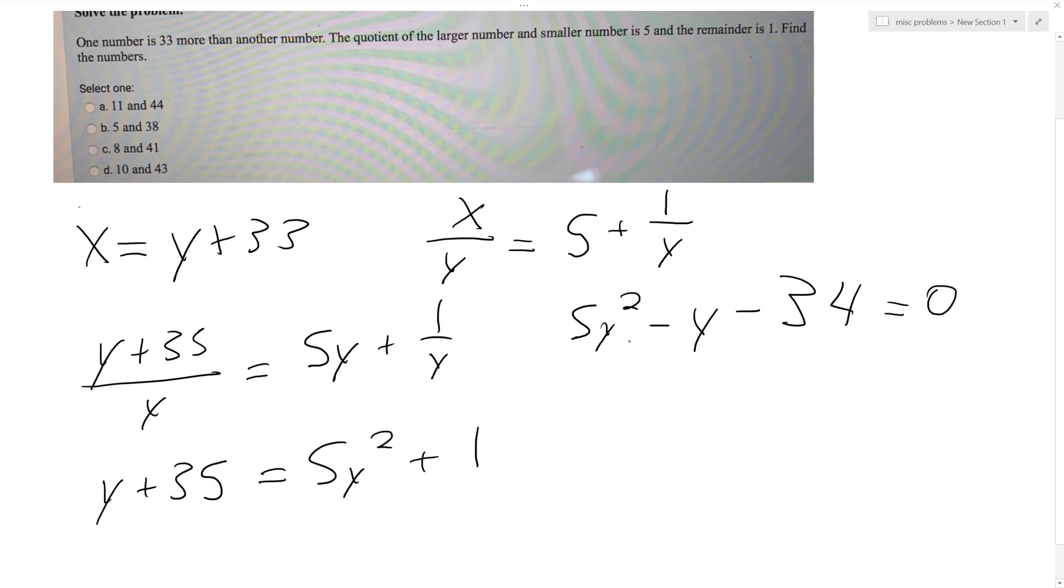And if we plug this into the quadratic formula, it's kind of tough to work with. So we get the opposite of b, so 1 plus or minus the square root of b squared, which is 1, minus 4 times a, which is 5, times c, which is negative 34. So that's 20 times 34, and then we get over 2 times a, which is going to be 10.